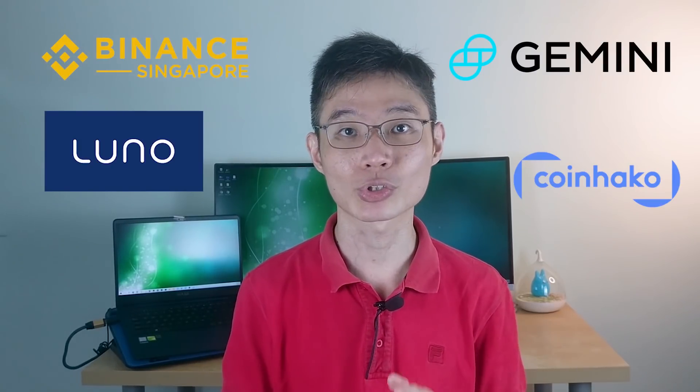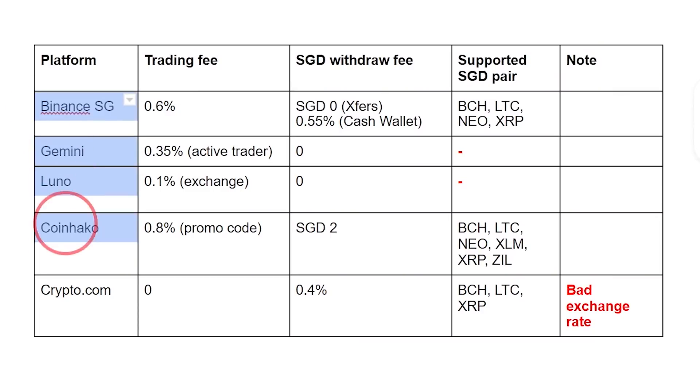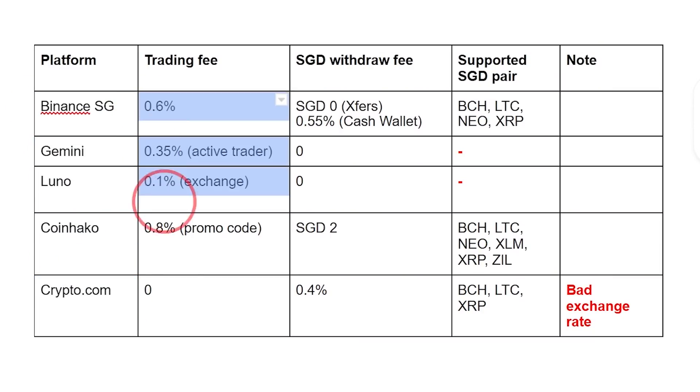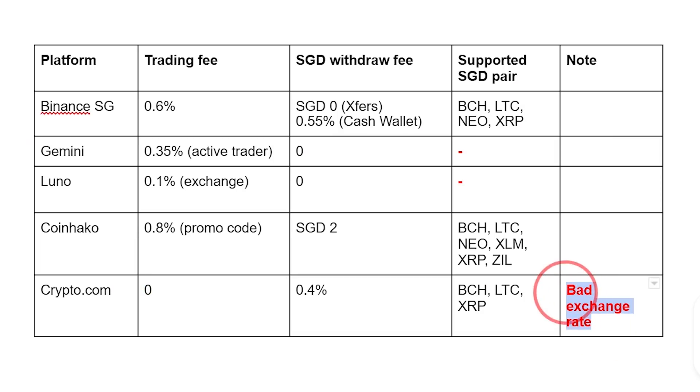Now we know which are the cheapest cryptos for withdrawal. Let's find out which crypto exchange we can transfer to. There are several popular crypto exchanges that let you withdraw SGD: Binance SG, Gemini, Luno, CoinHako, and Crypto.com. On the first column we have the crypto exchanges, followed by the trading fee. CoinHako has the highest trading fee at 0.8%, and Crypto.com doesn't have any trading fee. But take note that Crypto.com has a bad exchange rate compared to other platforms, so personally I would not consider Crypto.com for this.